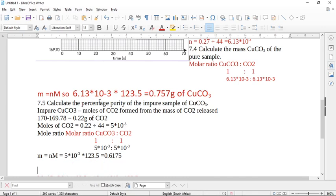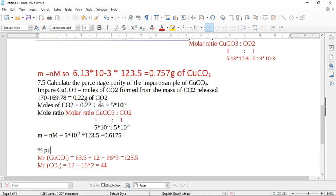Now it's asking you to find the percentage purity. So remember percentage purity is actual yield over theoretical yield. So percentage purity equals actual yield over the theoretical yield times 100. So my actual yield is what we've just found now from the impure sample, 0.6175. And we're going to divide that over 0.757. Remember here, this is from the pure one. And then we're going to multiply by 100. And if we put this in our calculator, I get 81.57% pure. And that should be my final answer.